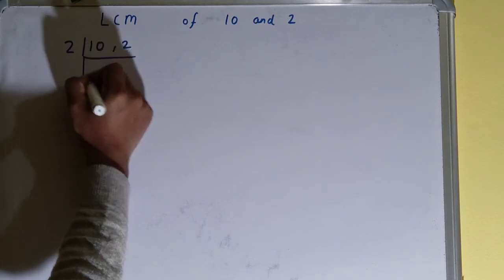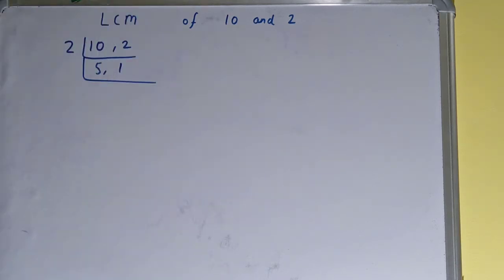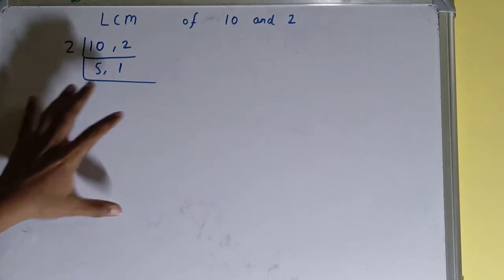So we'll divide, and on dividing we'll have 5 comma 1. Now if we see, both numbers are not divisible by 2, so we'll go to the next prime number, that is 3. Both numbers are not divisible by 3 as well.